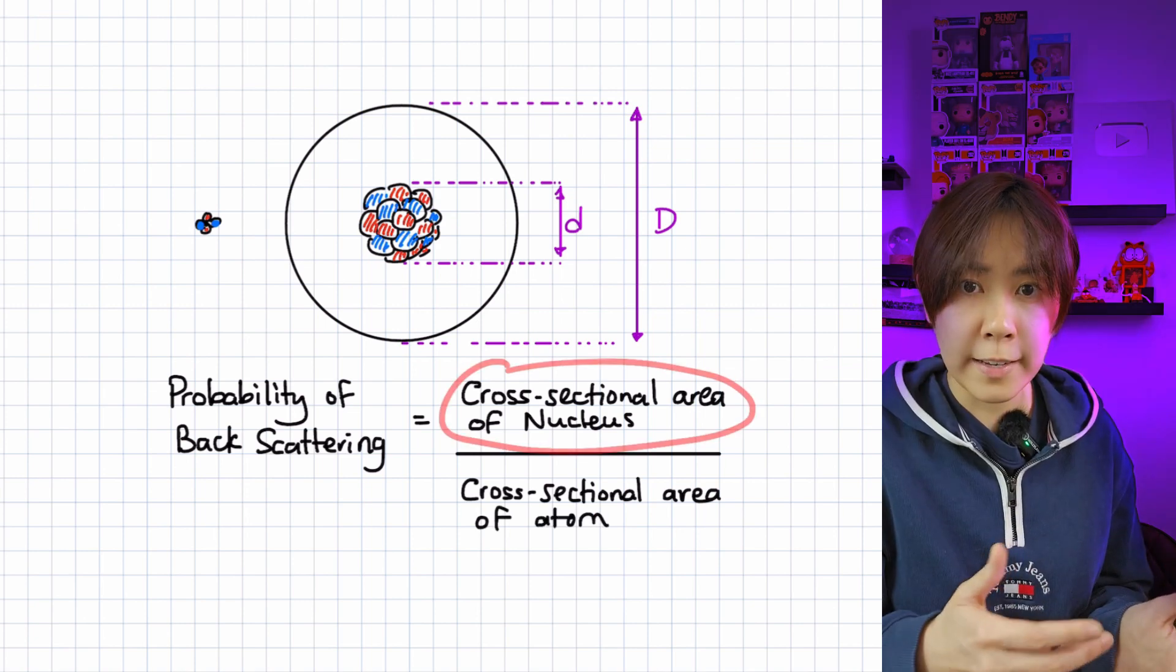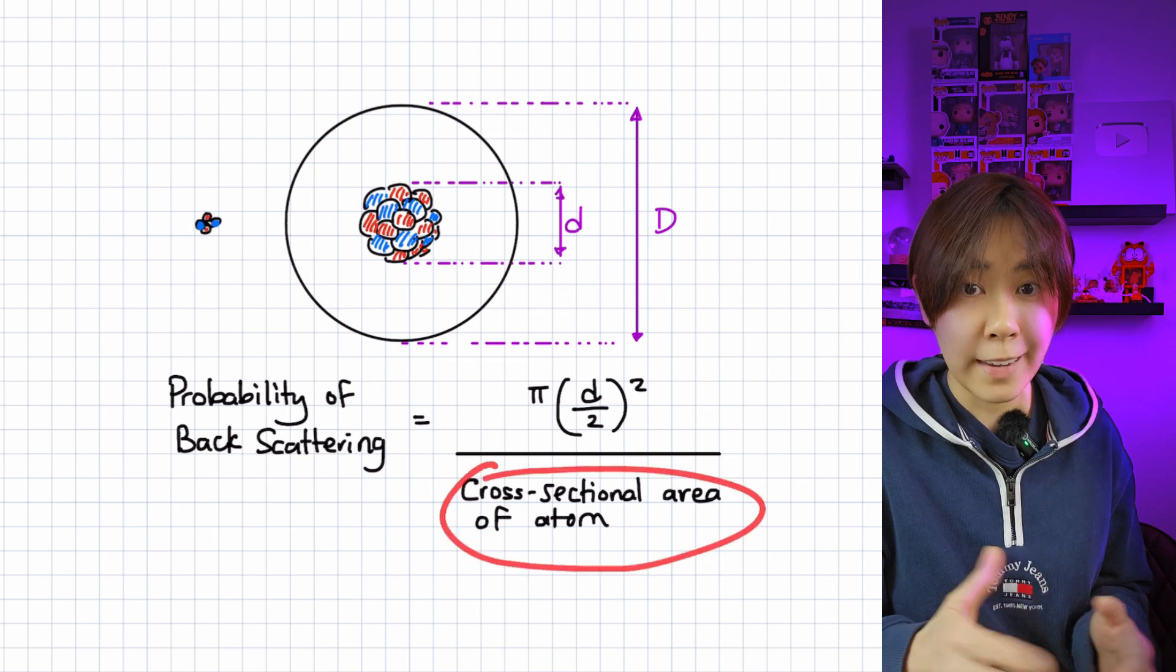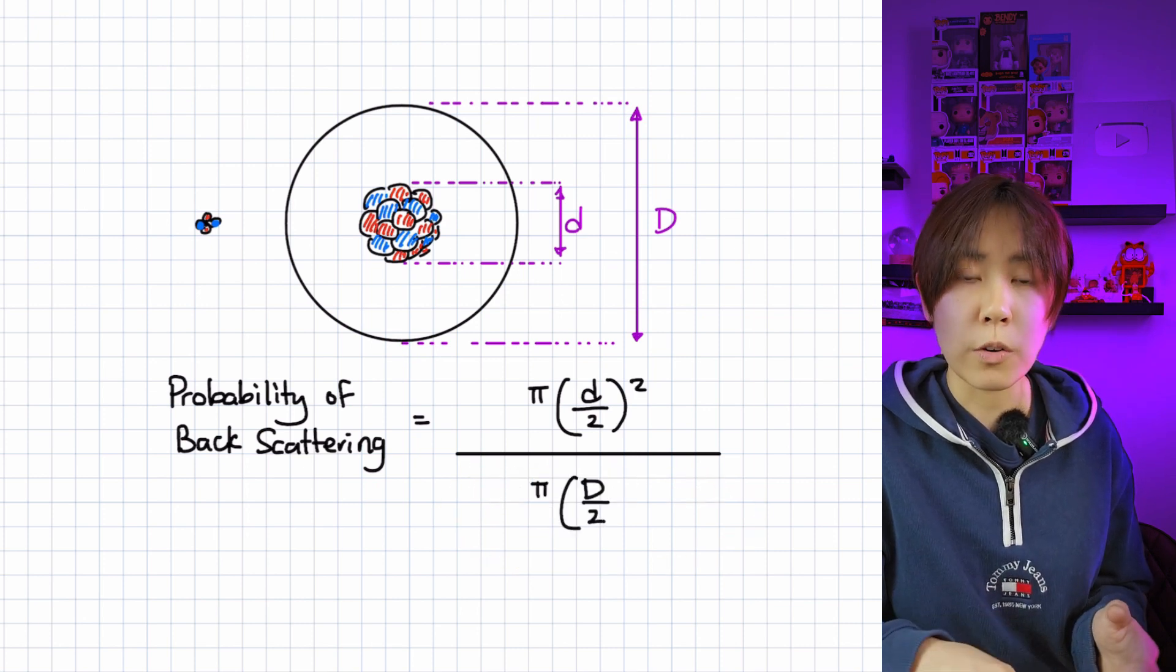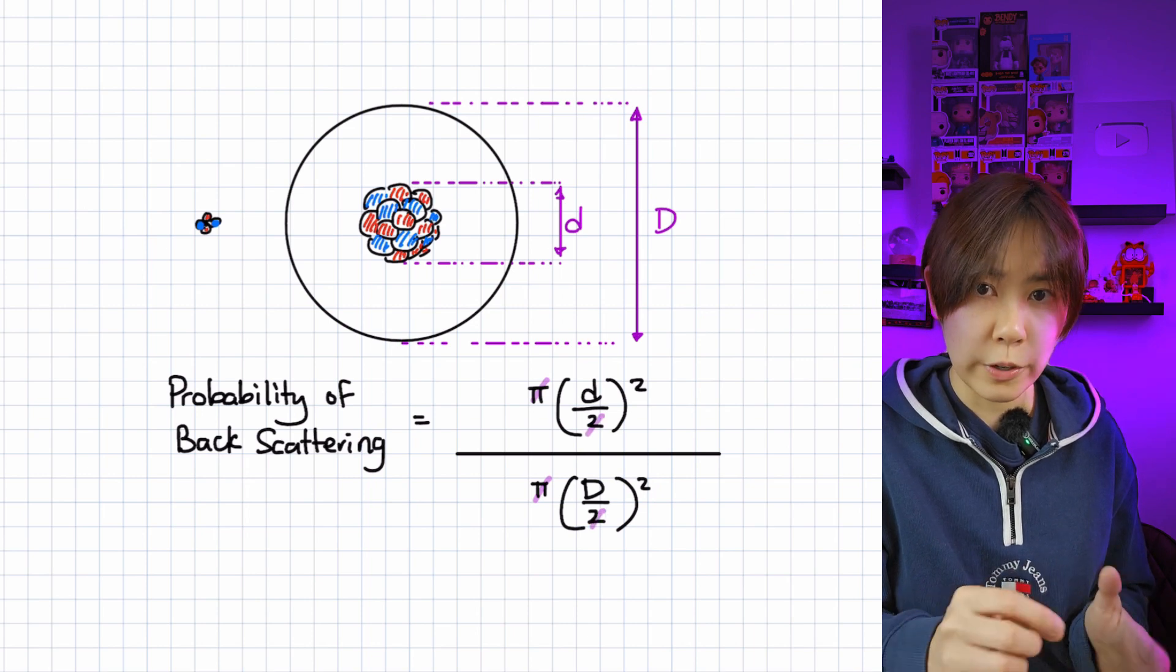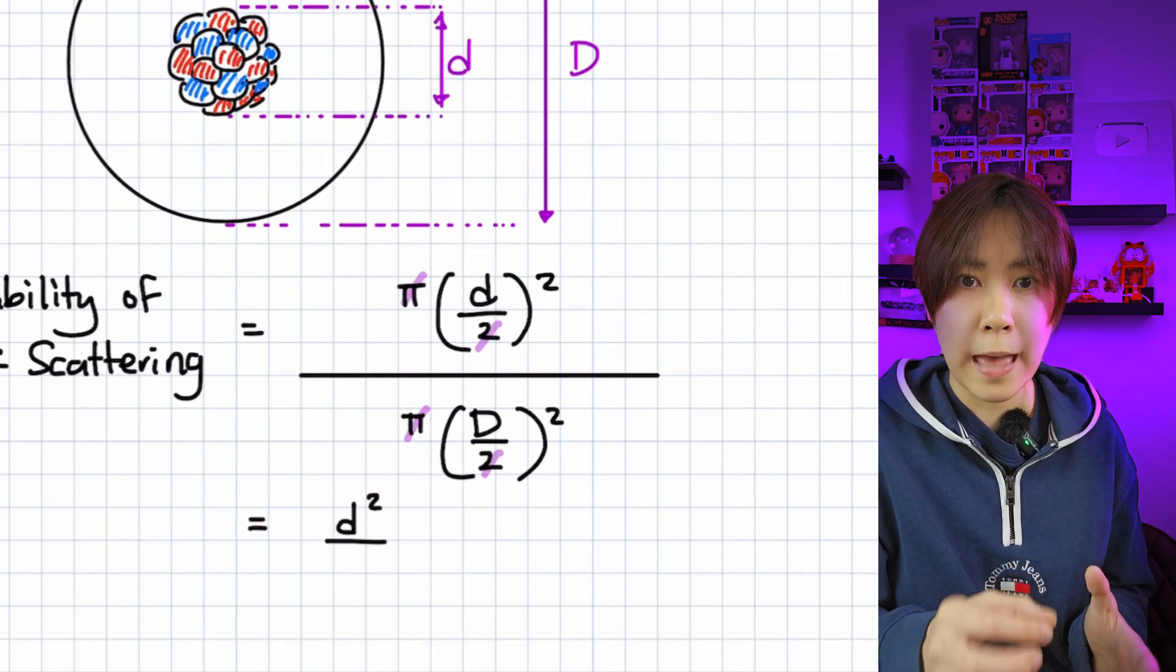This becomes pi d over 2 squared and pi capital D over 2 squared. Let's cancel out the constants. We are left with lowercase d squared over capital D squared.